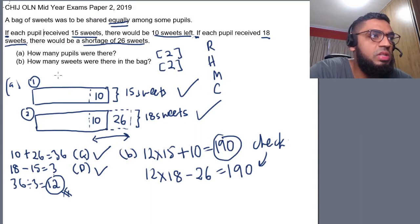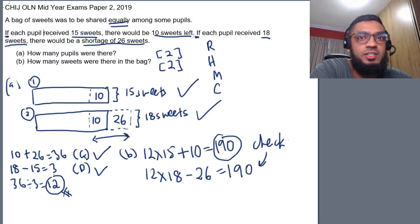And for part B, you can use either model number one or model number two to get the answer for number of sweets in this case. So, that is a gaps and difference question or also known as excess and shortage question.